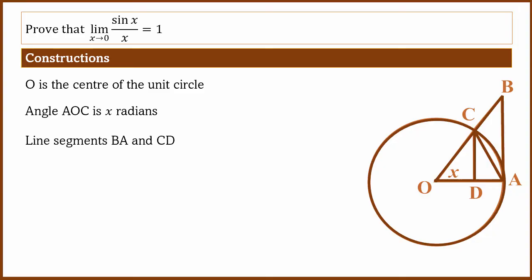Segments AB and BA, CD are perpendicular to OA. OA is the horizontal line. CD and BA are vertical lines, perpendicular to it. This is the construction.